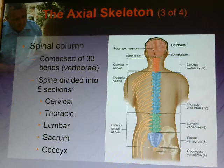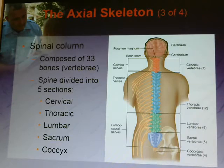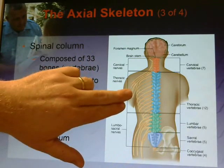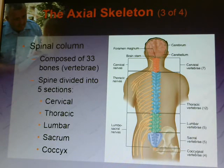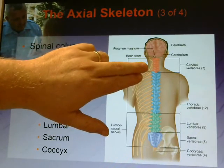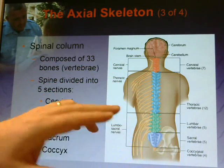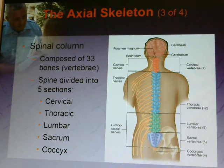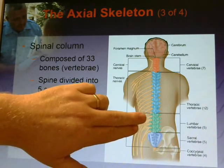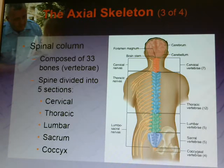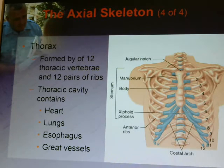The spinal column is composed of 33 bones or vertebrae, divided into five sections: cervical, thoracic, lumbar, sacral, and coccyx. A good mnemonic: breakfast, lunch, and dinner. Breakfast is usually at 7, so there are 7 cervical vertebrae. Lunch is around 12, so there are 12 thoracic vertebrae. Dinner is at 5, so there are 5 lumbar vertebrae. The sacral has 5 and the coccyx has 4. The thorax is formed by 12 thoracic vertebrae and 12 pairs of ribs.